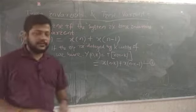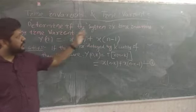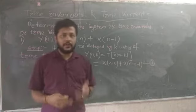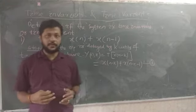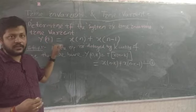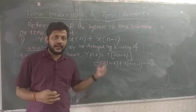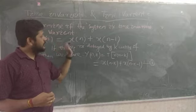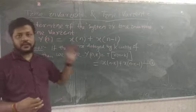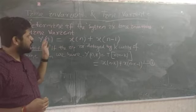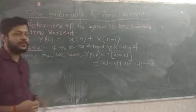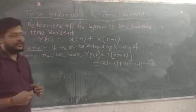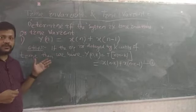Example one: determine if the system is time invariant or time variant. The system equation is given as y(n) = x(n) + x(n-1). We need to check whether this system is time invariant or time variant by following the two-step process.